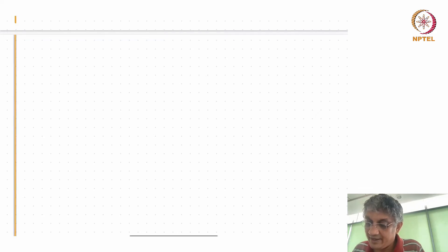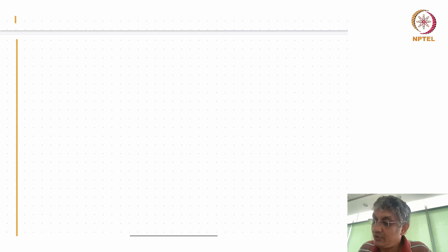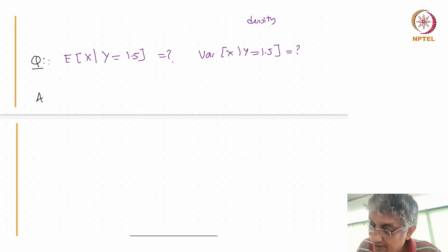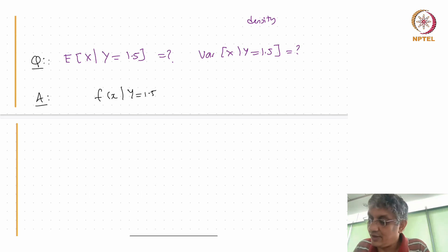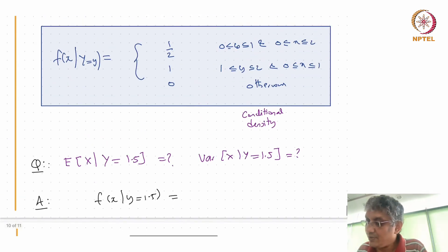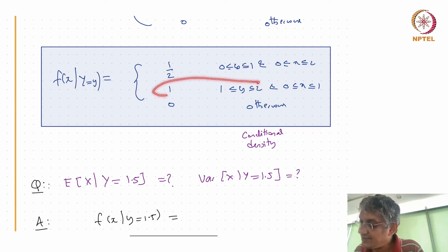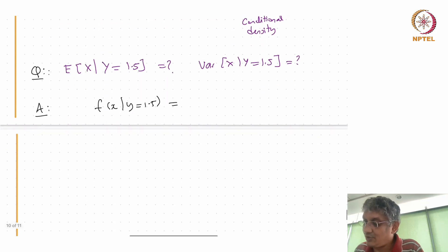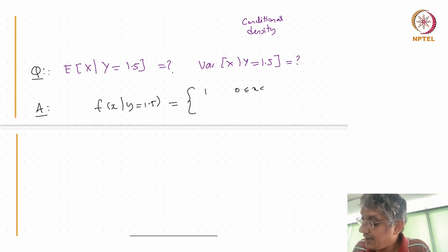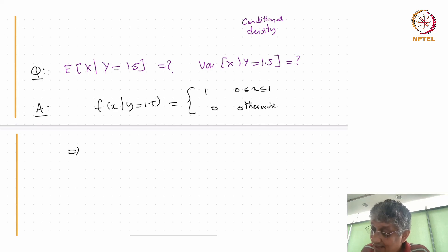One way to answer this is to use the formula for conditional density, conditional expectation, and conditional variance. But I'll do it differently — I'll just look at the density. What is f(x | Y = 1.5)? When y = 1.5, I focus on that region. The density is 1 when x is between 0 and 1, and 0 otherwise.